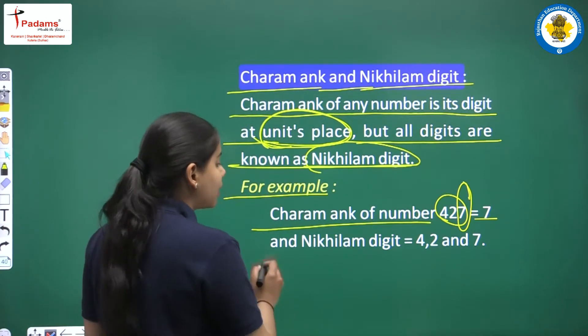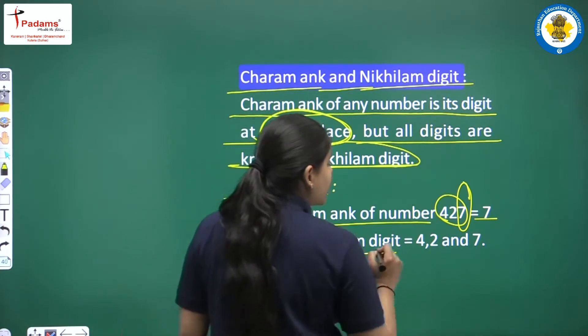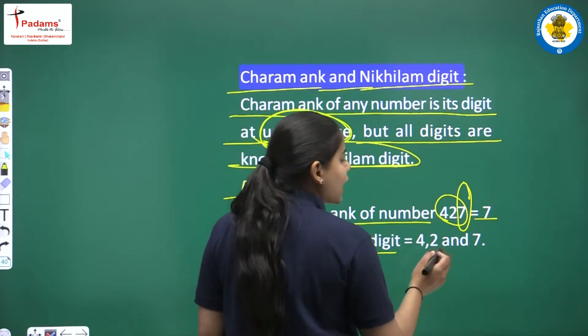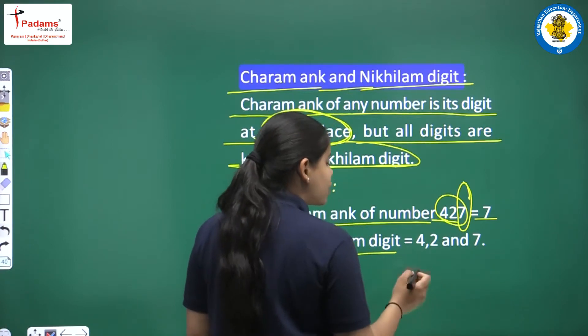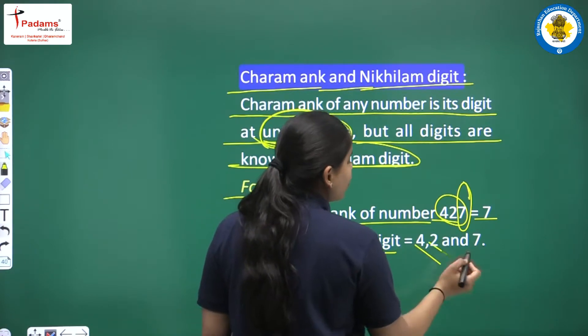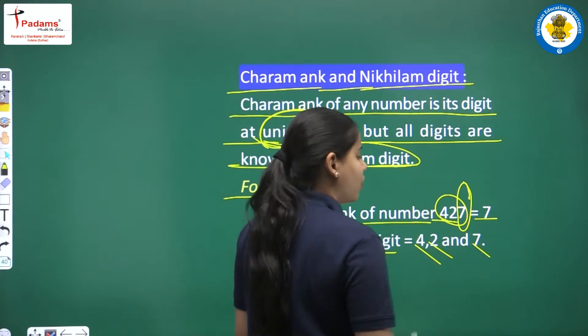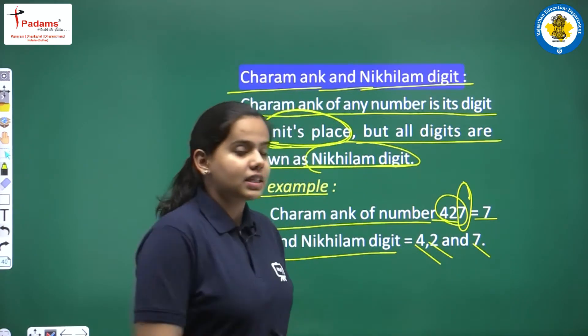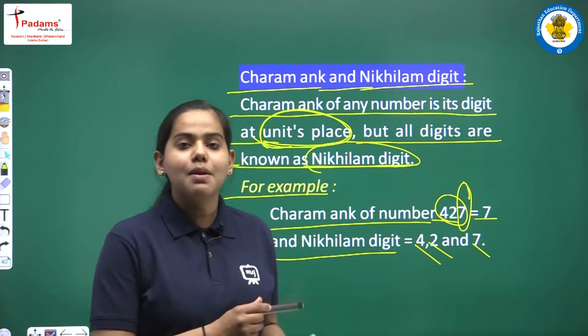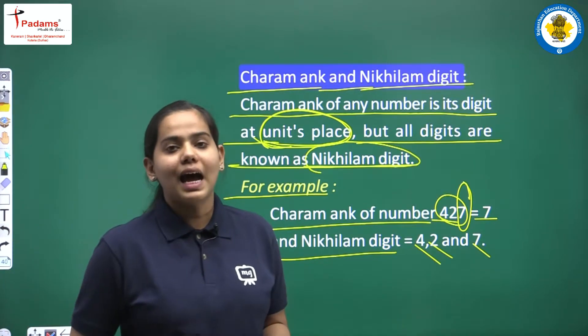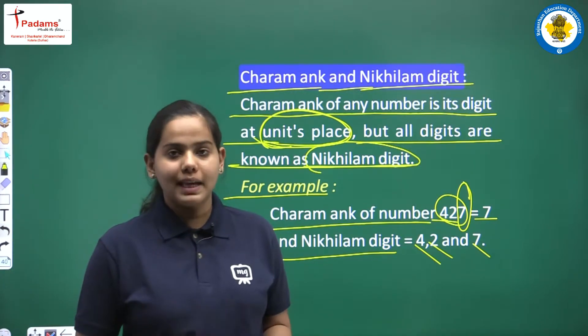Now look at Nikhilam Digit. Nikhilam Digit is the rest of all digits: 4, 2, and 7. This is known as Nikhilam Digit, and Charam Ankh is the units place digit.